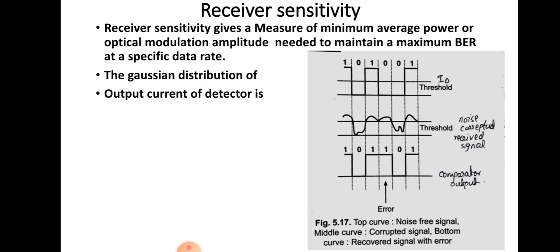Receiver sensitivity gives a measure of the minimum average power, or optical modulation amplitude, which is needed to maintain a maximum bit error rate at a specific data rate. BER is the bit error rate.